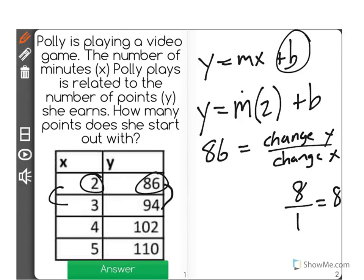So knowing that, we can say that 86 equals 8 times 2 plus b. Now we can fill out the rest of the equation. I'm going to move this up here so we have more space.